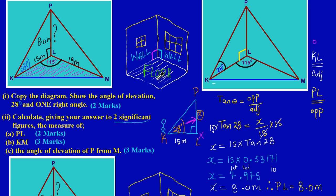Hi guys, in the previous video question 10b part 1, we had looked at copying the diagram, inserting the angle of elevation which is 28 degrees and one right angle which we had identified. We had also looked at calculating the vertical height of the pole PL, and here's the calculation where we found our vertical height to be 8 meters.